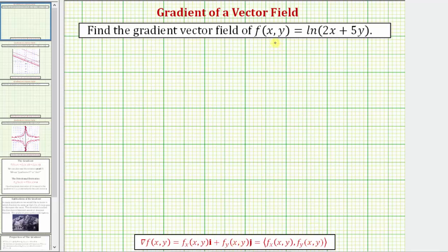If f was a function of x, y, and z, then the gradient of f would also have a z component equal to the partial derivative of f with respect to z.